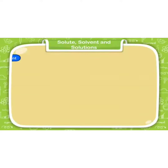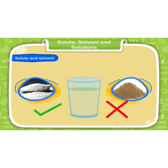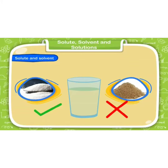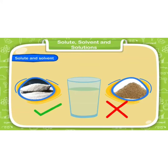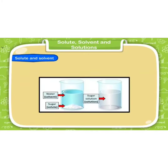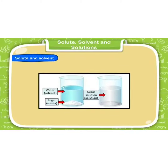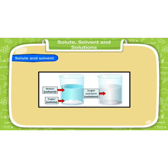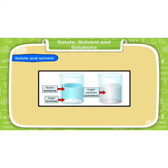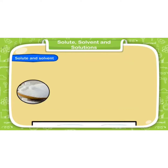Solute and solvent. Sugar is soluble in water and sand is not soluble in water. So here sugar is solute and water is solvent. The substance which is soluble in other substances is known as solute. A substance in which solute is dissolved is known as solvent. When solute is dissolved in solvent, we get solution.